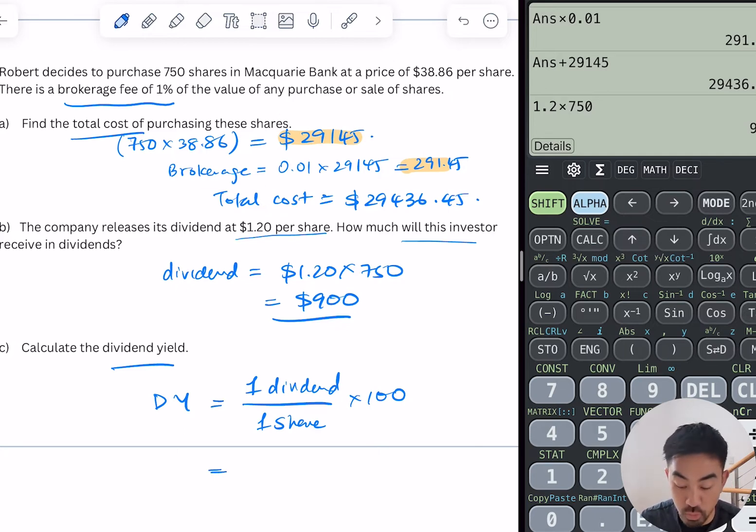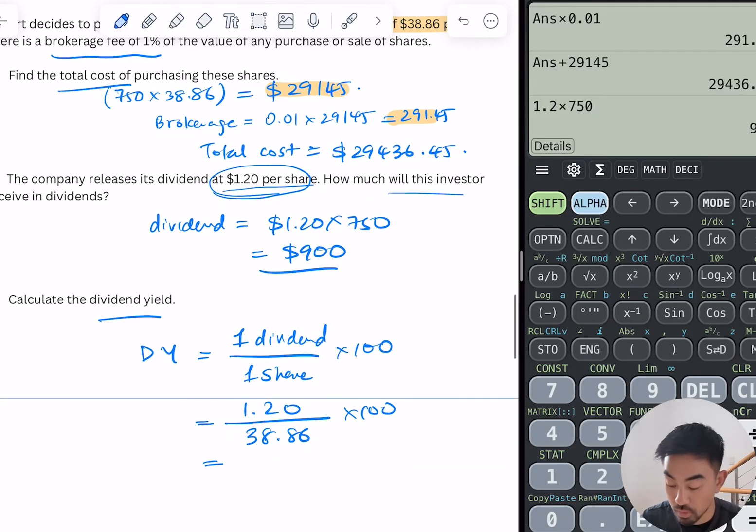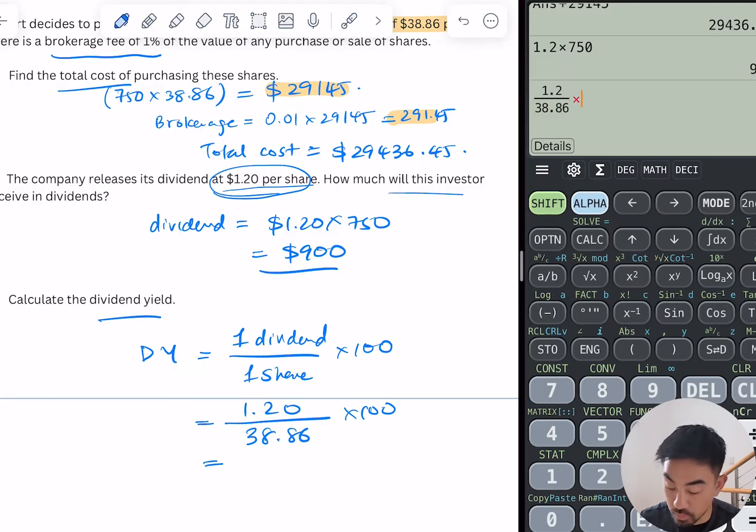Well it says $1.20 from the previous question here. What's the value of one share worth? Well if I go back up here it's $38.86 times 100 to get a percentage, and that is it. So 1.2 over 38.86 times 100. So that's 3.09%. That is the dividend yield. So if you just remember it's one dividend divided by one share times 100, it's straightforward.